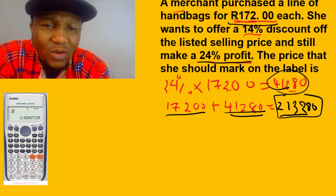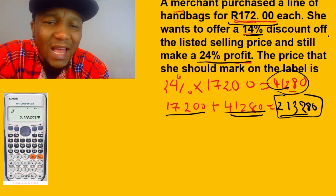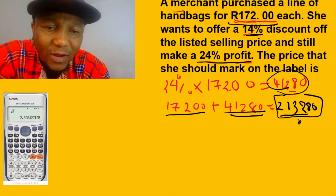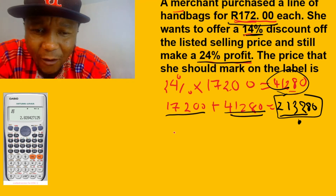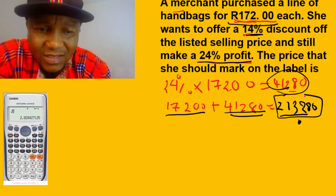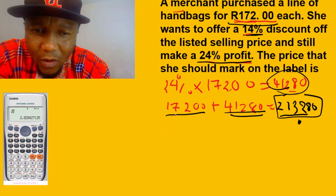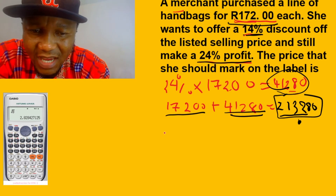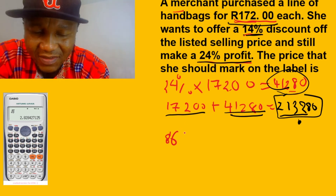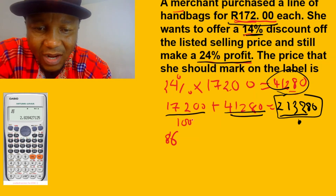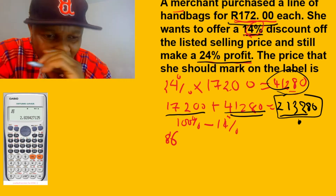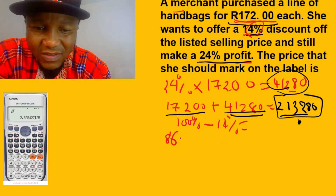She wants to offer a 14% discount off the listed selling price. So how do we do this? If 14% is the discount, we take 100 minus 14, which gives us 86%. So 86% of the listed selling price equals the amount after the discount.